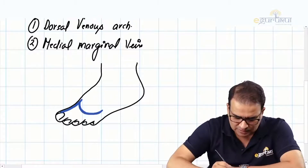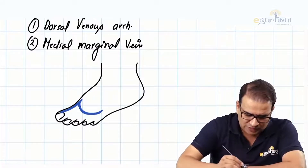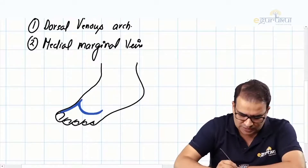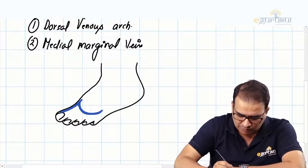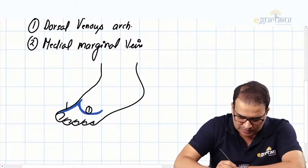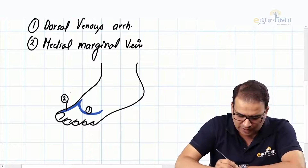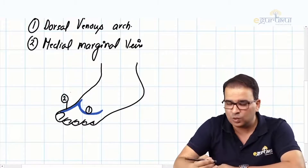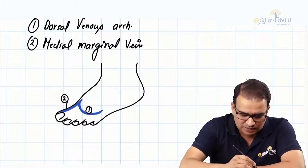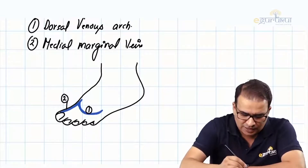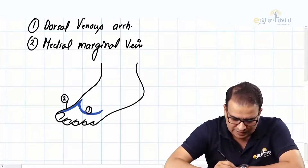Number one is the dorsal venous arch and number two is the medial marginal vein. When these two unite, they are the ones giving rise to the great saphenous vein.